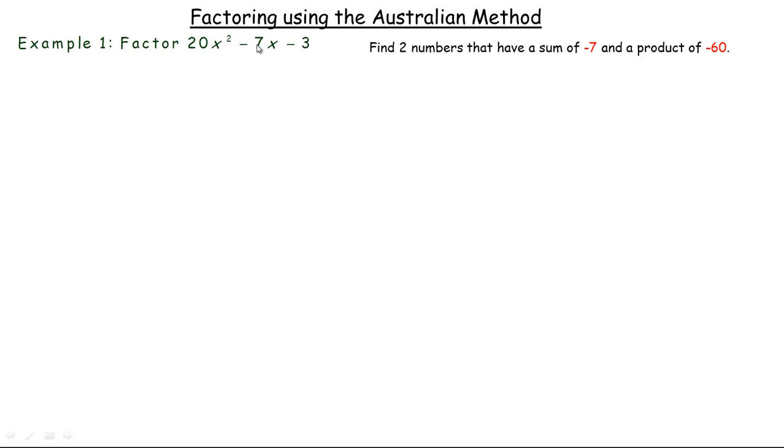So we need to look for two numbers that have a sum of negative 7 and a product of negative 60. And so there's lots of pairs of numbers that multiply by negative 60, but you're looking for the only pair that has a sum of negative 7. And those numbers would be negative 12 and 5.